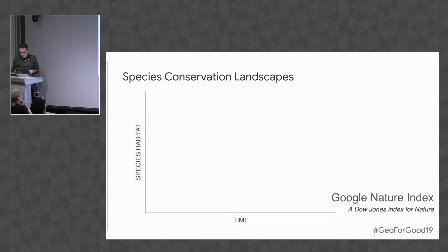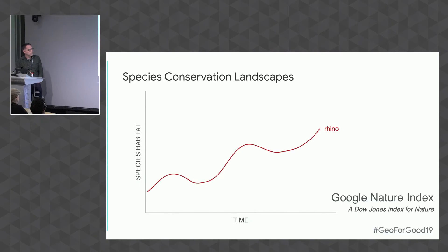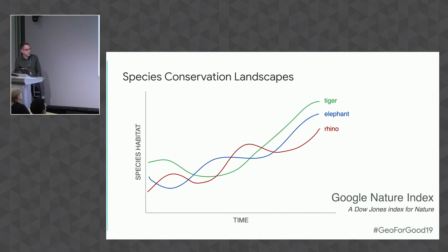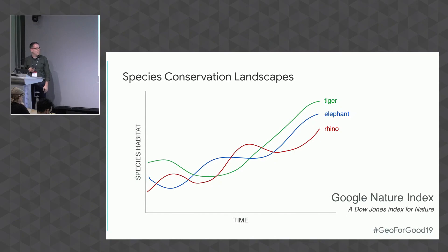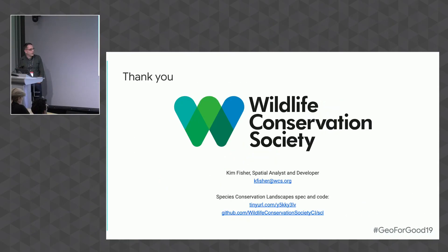If we could do that for tigers, the idea is we could do that for other species. So if we could track how the habitat for any given species is doing over time, we could start to produce a kind of index of species habitat — a Google Nature Index, let's say — and report that out the same way we do the Dow Jones. So that's the idea and that's what we've got.